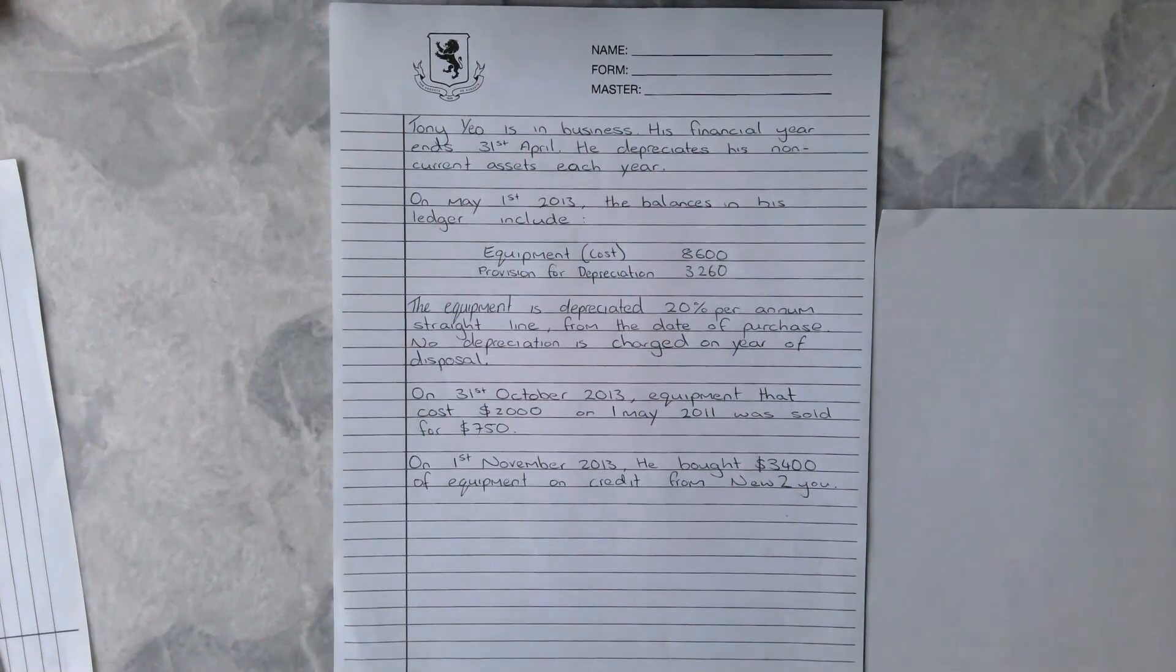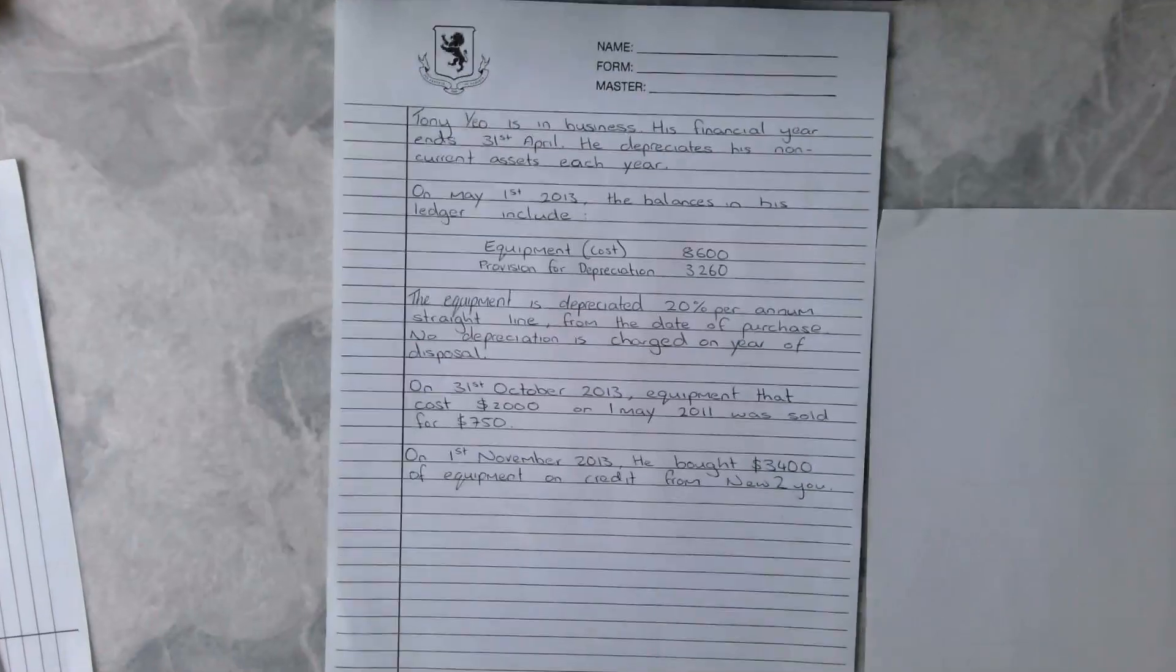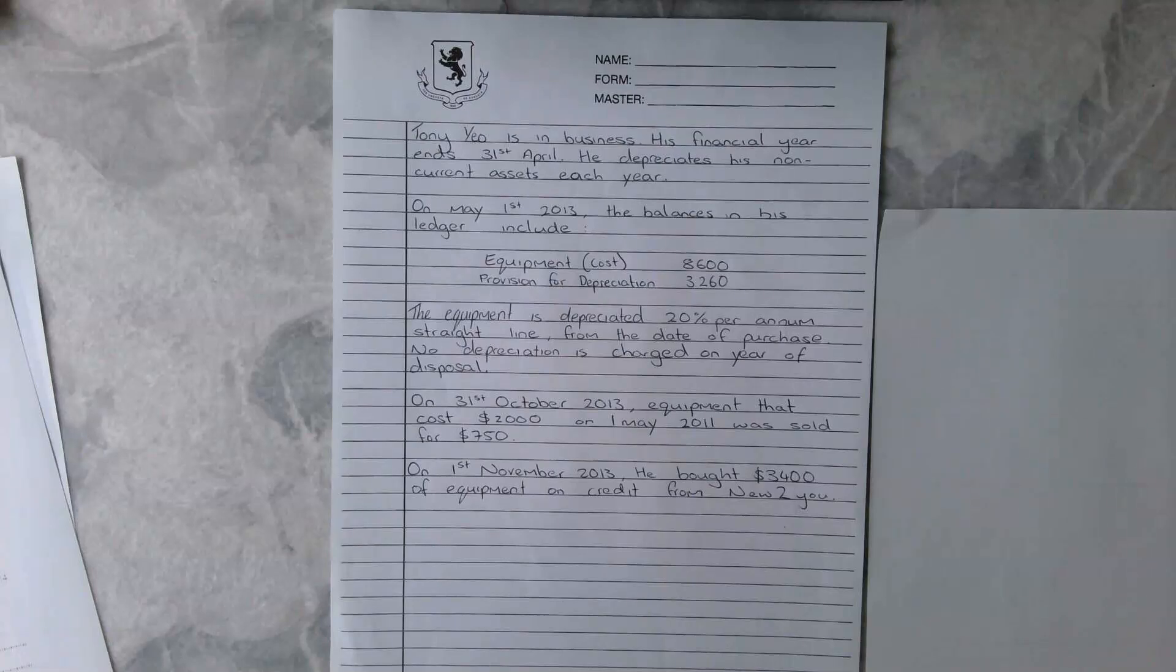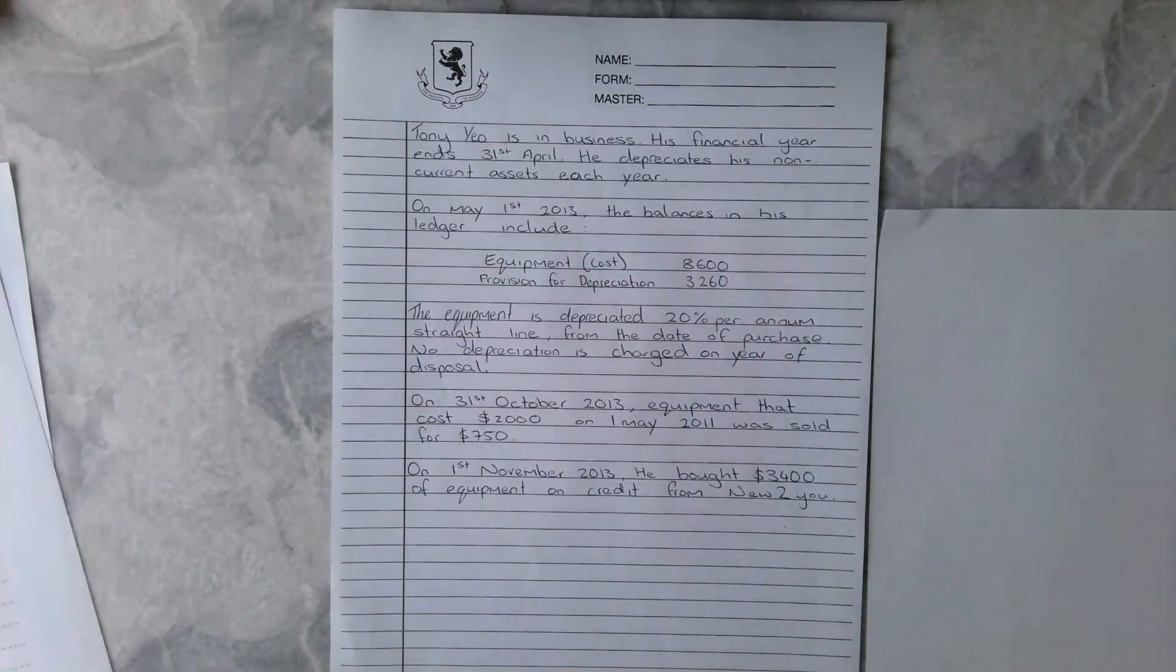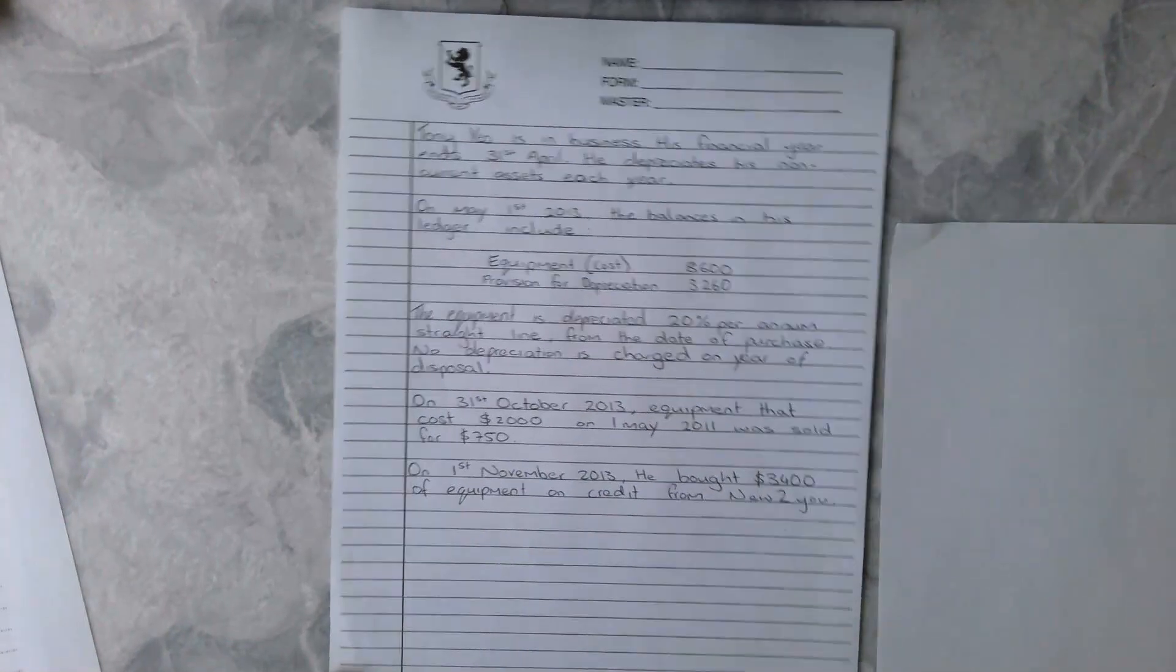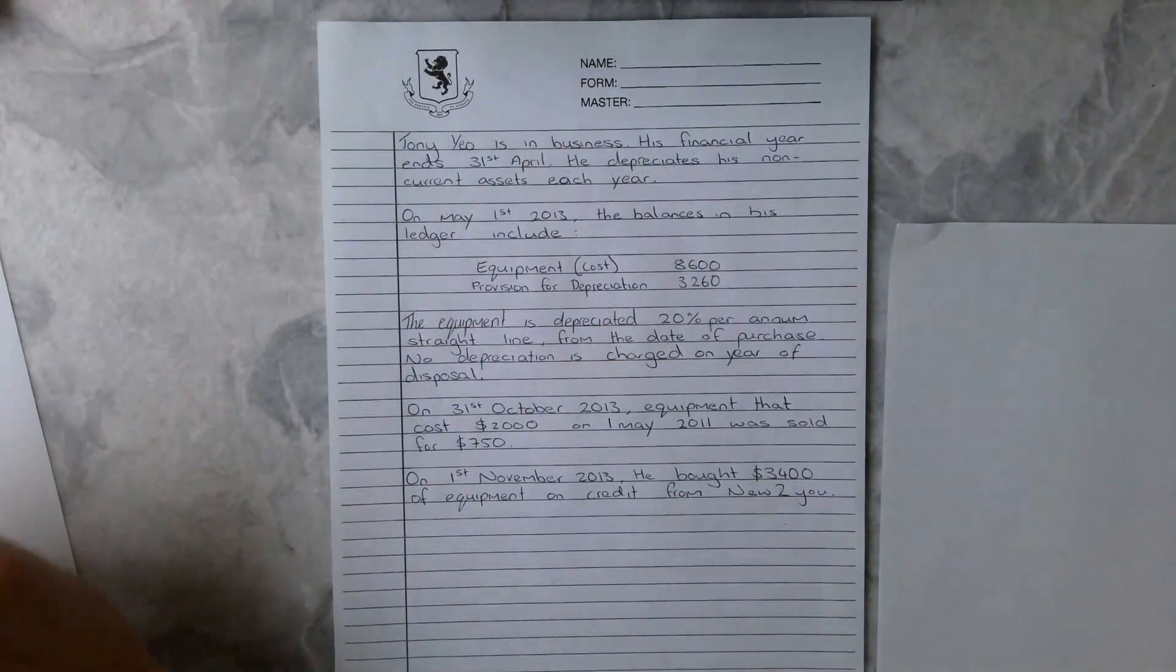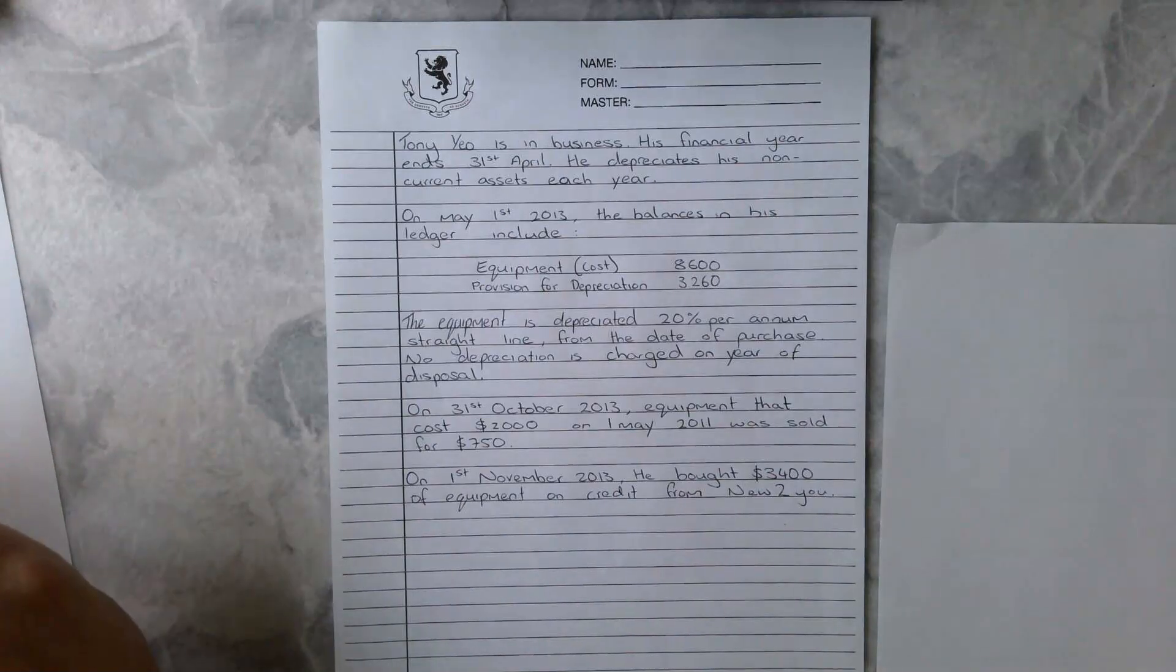Okay, welcome back to this video on disposals. This is a Tony Yao question, a Cambridge past examination question in your booklets on page 173. I've just handwritten the question because I have run out of ink on the printer. This video will go over this question. Tony Yao has his financial year ending on the 31st of April.